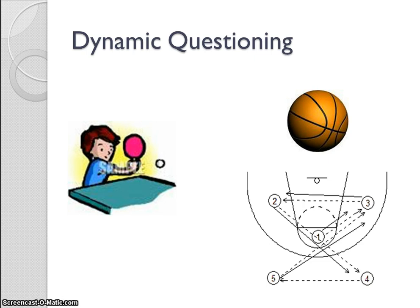One way to do this is to use what Dylan William calls basketball questioning instead of table tennis questioning. In many classrooms, teachers initiate a question, call on an individual student — often with his or her hand up — assume when an answer is given that other students understand, and then move on, repeating this cycle. He calls this table tennis questioning.